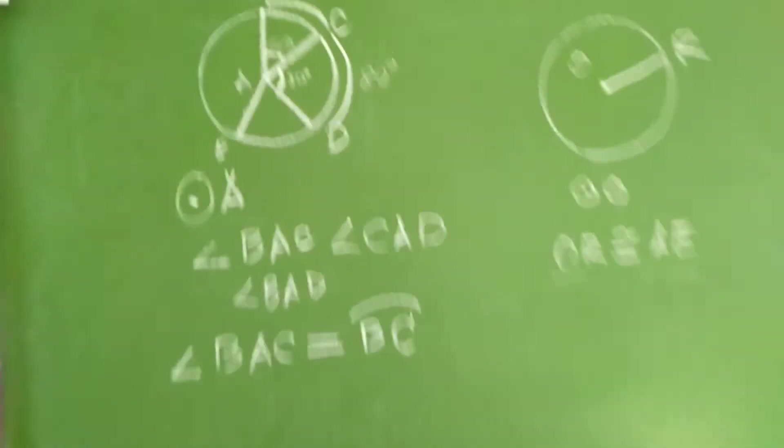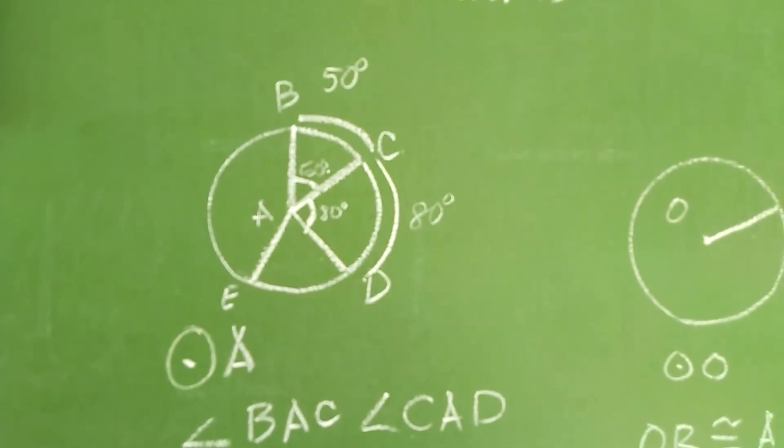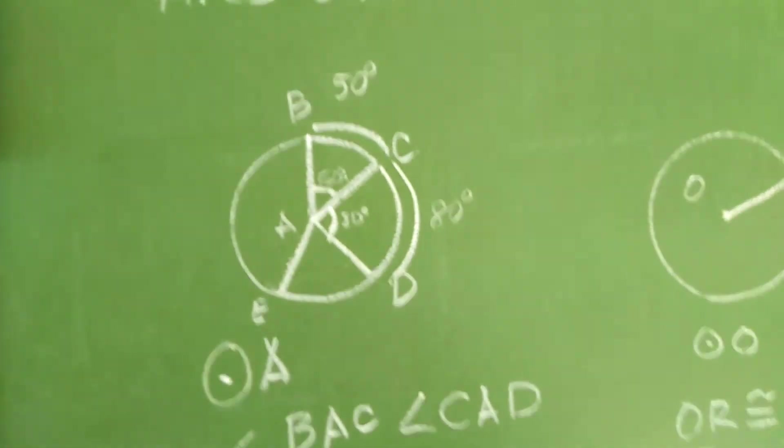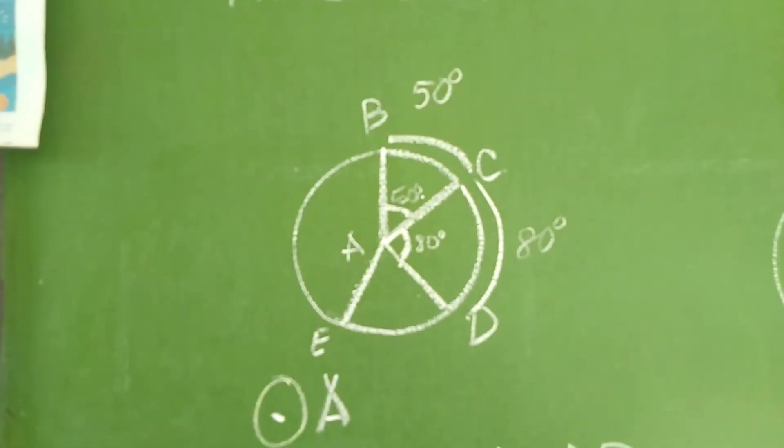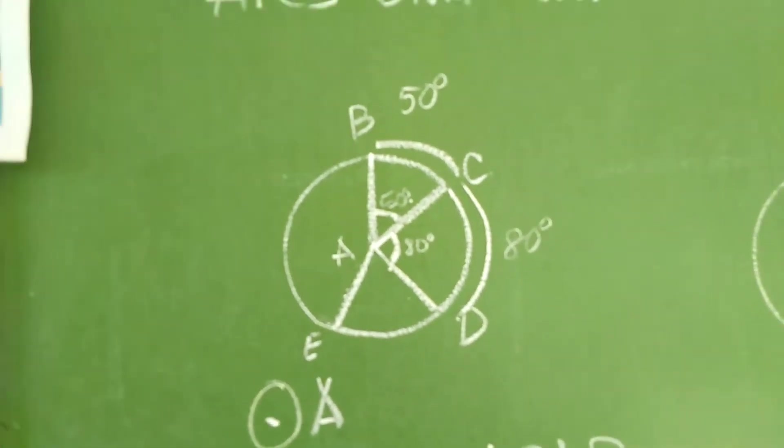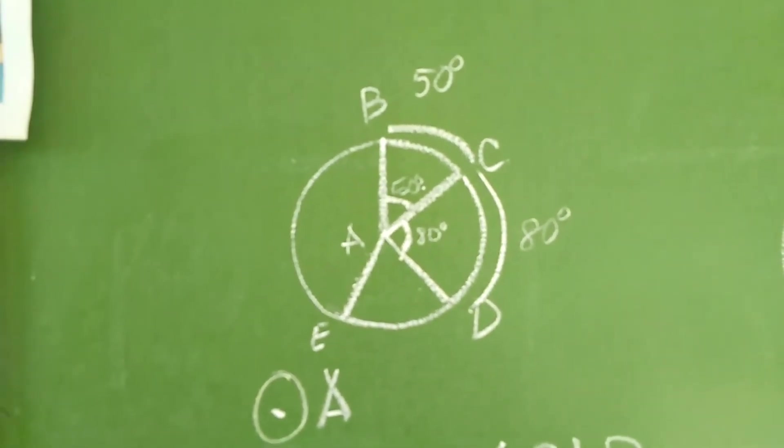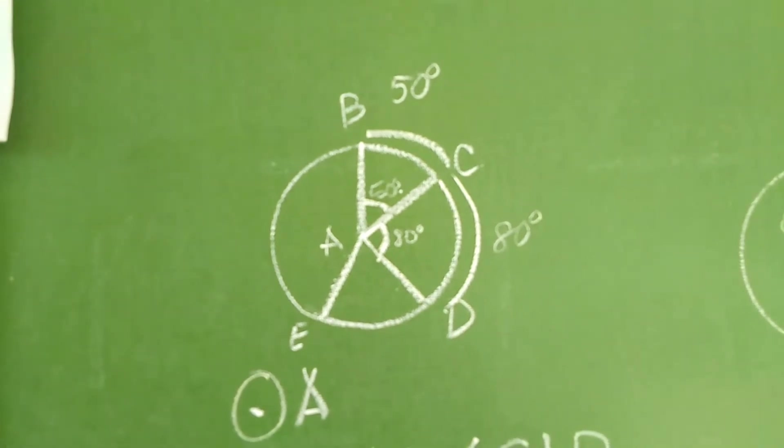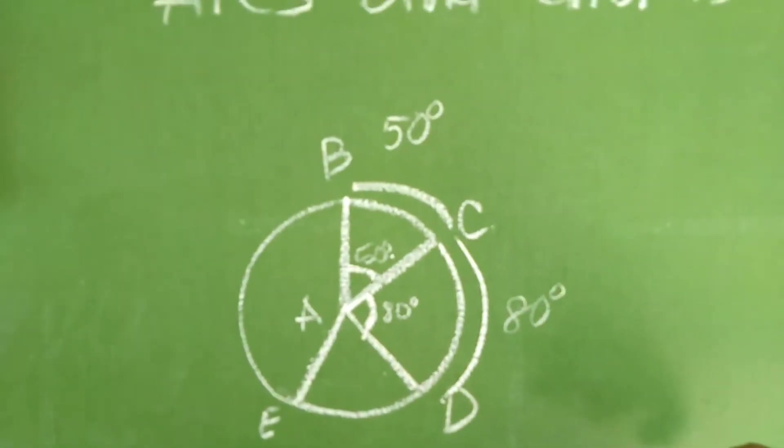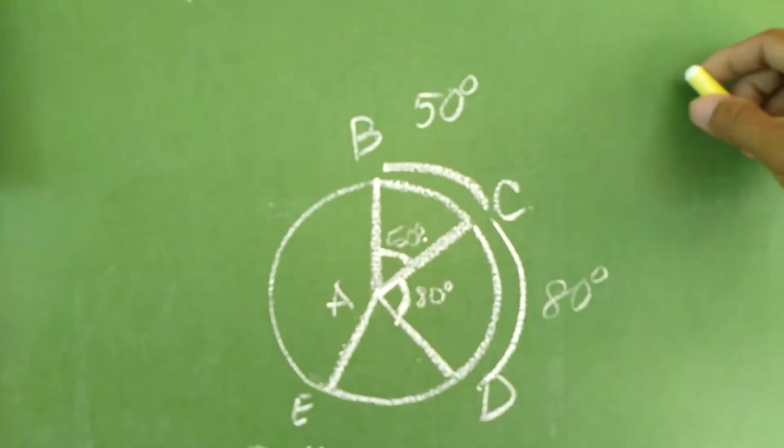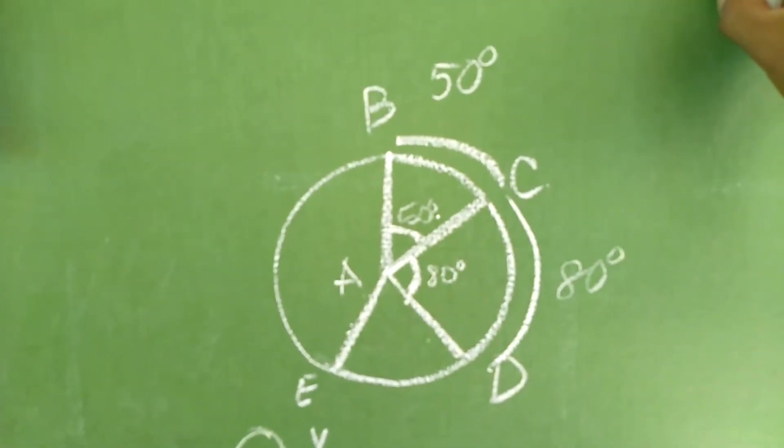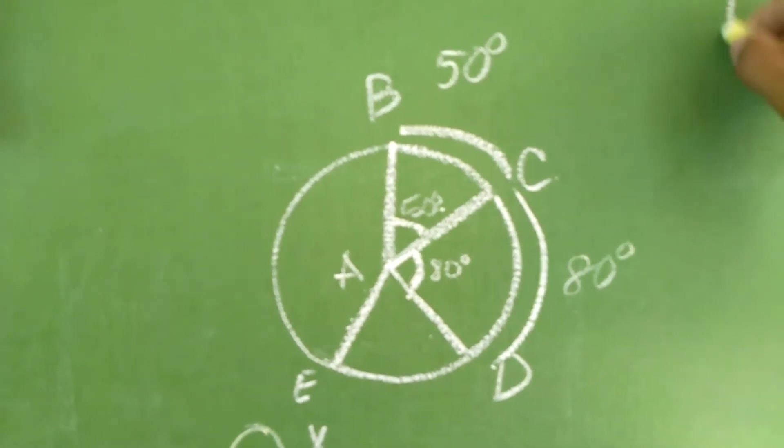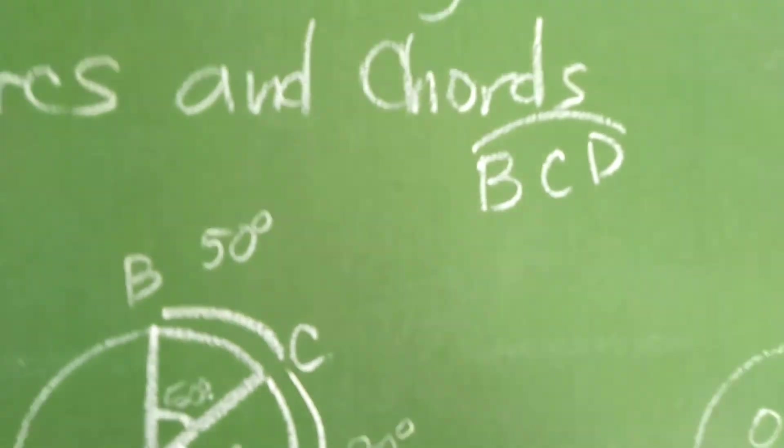This is, itakal na rin po natin ang addition, arc addition postulate. Okay? Tignan nyo pong mabuti ang first circle natin kanina. Okay? Kung yan po, ang ating first circle, meron na po ako na ibigay ng mga ibang constant, no? Sabi natin dito, or kunwari, ang problem na pinapahanap sa atin is, hanapin natin ang measurement ng B, C, D. Arc B, C, D.